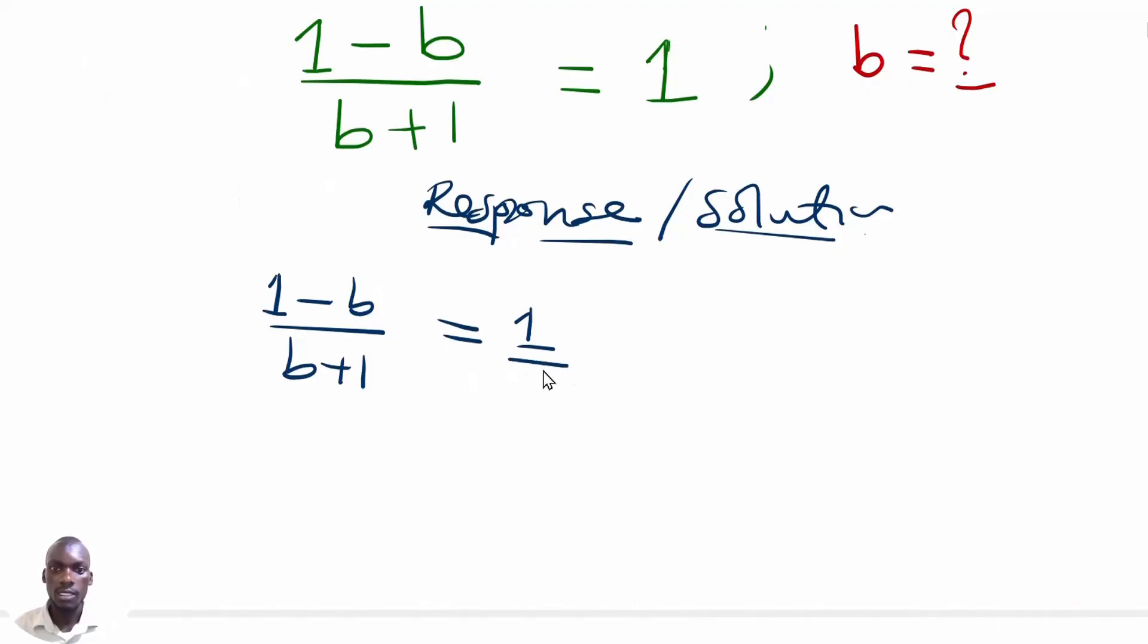Since this is also divided by 1, then our next step is to cross multiply, so that we have the 1 multiplying the 1 minus b equals to this 1 multiplying the b plus 1. So these are 1s.